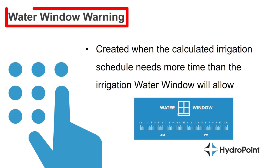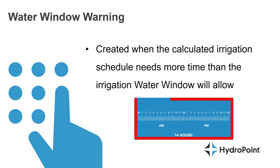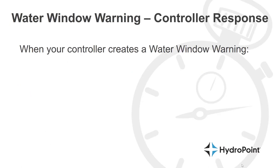A water window warning is created when the calculated irrigation schedule needs more time for irrigation than the water window will allow. So if your schedule requires 14 hours for all of your irrigation but your water window is only 12 hours long, we can't fit all of the irrigation that we need into the time that's allowed, and a water window warning is created.